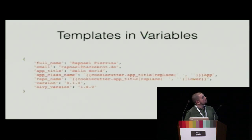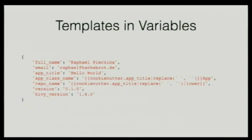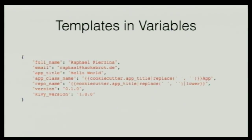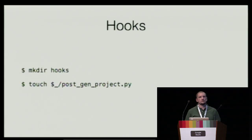Talking about advanced usage: you can template your variables inside the JSON. There's a best practice in Python where you have a human-readable project name, then a repository name which is all lowercase with dashes, and a Python package name which is all lowercase with no dashes. What I'm doing here is using the application title, replacing every space with an empty string to remove spaces, and appending the string 'app' at the end. The repository name should be all lowercase without the 'app' suffix.